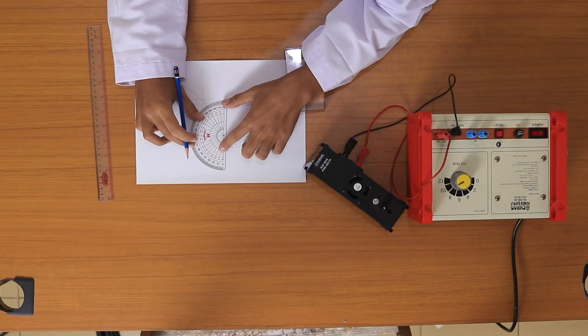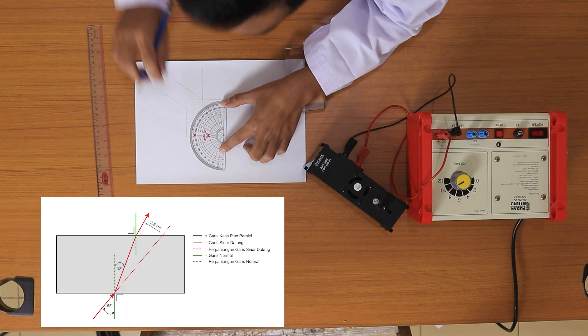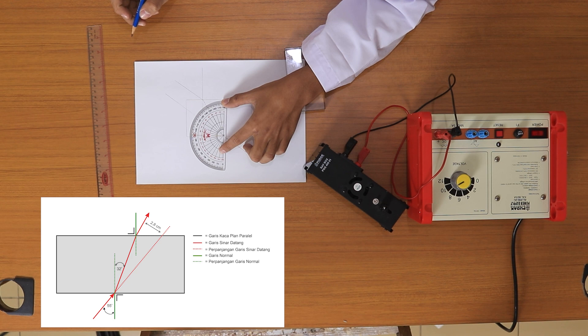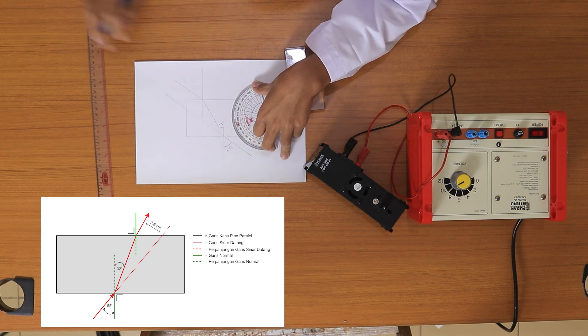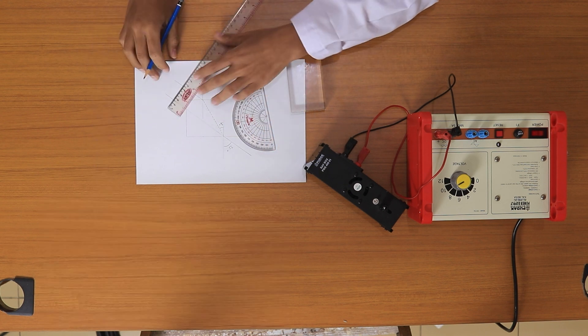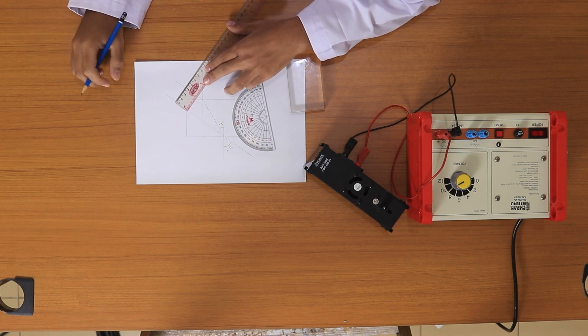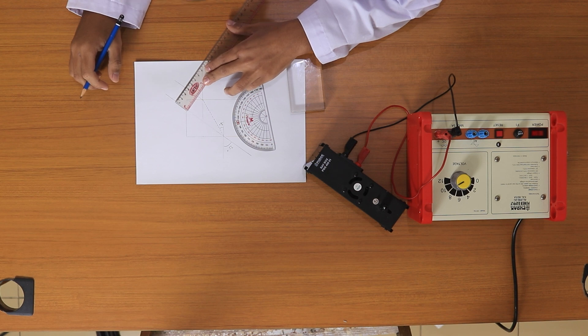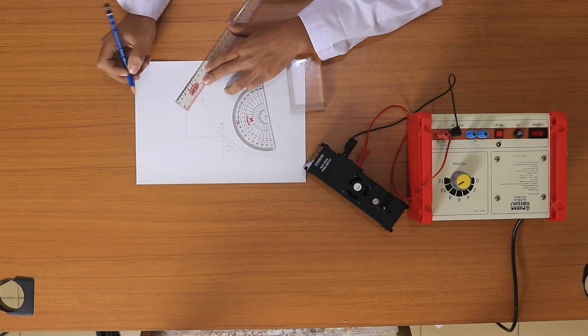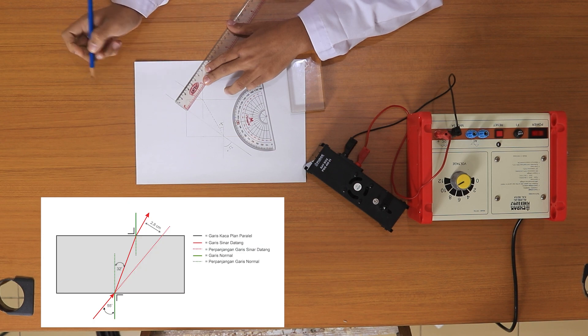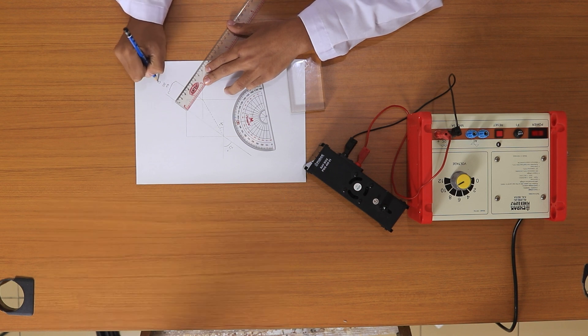Selanjutnya kita ubah sudut datang menjadi 55 derajat. Dapat diamati besarnya sudut bias yaitu 32 derajat. Kemudian kita ukur pergeseran sinarnya menggunakan mistar. Dapat kita lihat besarnya pergeseran yaitu 2,8 cm. Demikian praktikum indeks bias kaca pelan paralel sudah kita lakukan. Silahkan data yang kita dapat tadi dimasukkan ke tabel pengamatan.